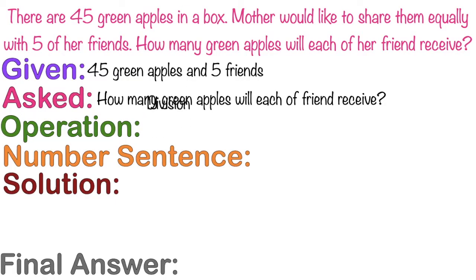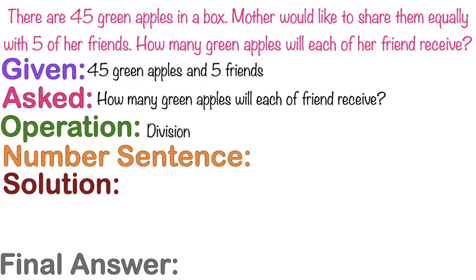What is the operation to be used? Good job! We're going to use division. Let's write the number sentence. In writing the number sentence for division, you need to write the dividend first. The dividend is the total number of objects. Then divide it by the divisor, which is the number of groups. Then equals n. So the number sentence is 45 divided by 5 equals n.